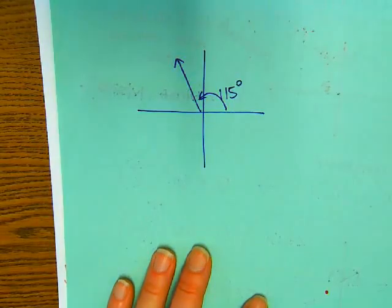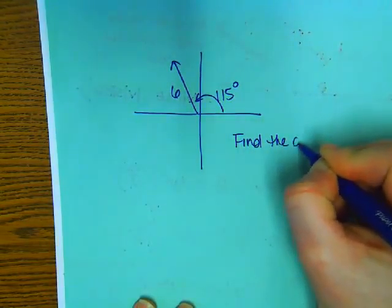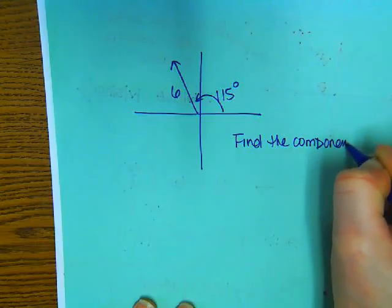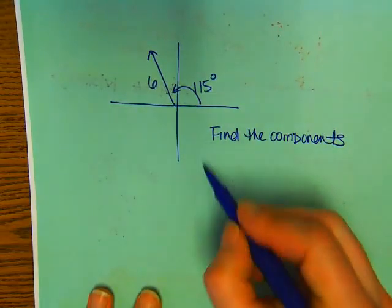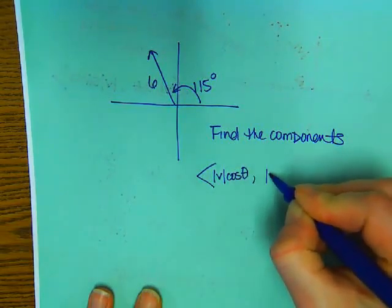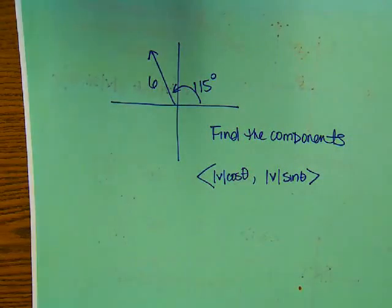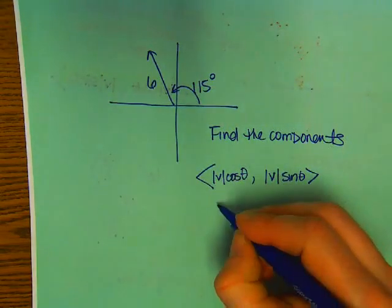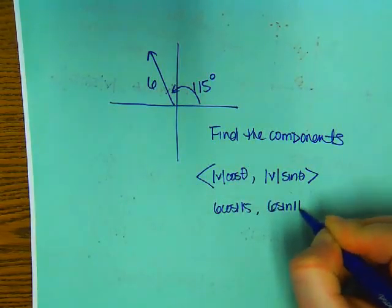If I told you that I had a vector, I don't know, and this was 115 degrees, let's say. So that's theta. And let's say it had magnitude of 6. And I said find the component. This was the first thing I had to write in your notes. The first component is just the magnitude times the cosine of the angle and then the second one is the magnitude times the sine of the angle.